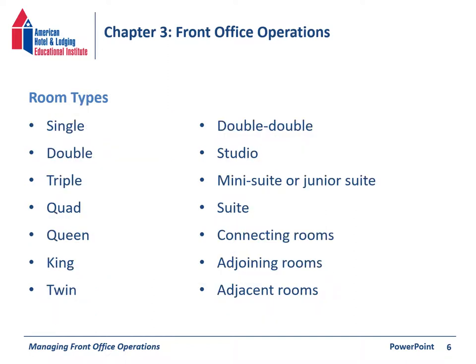Now for room types. Due out means the guest is due to check out. Connecting rooms have a door between them that you can go in and out of—there's a physical door, they share a wall. A connecting door means there is an actual door going between the rooms.